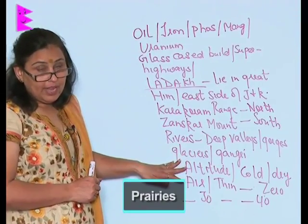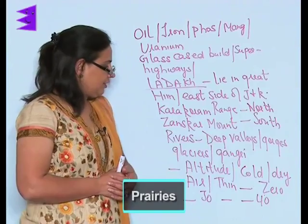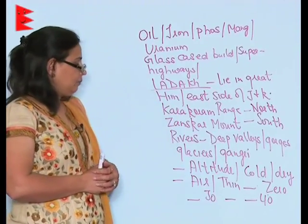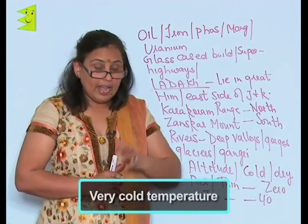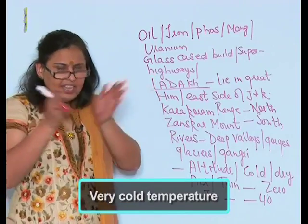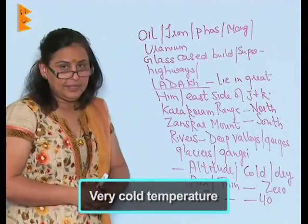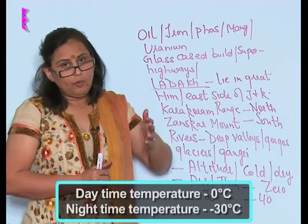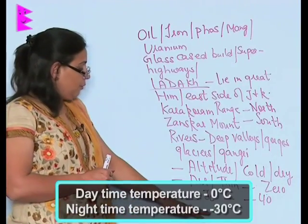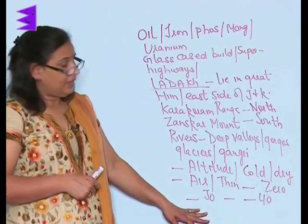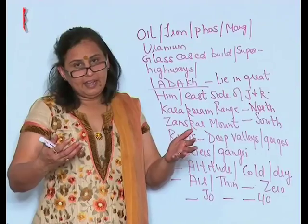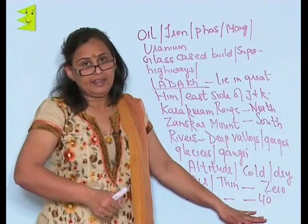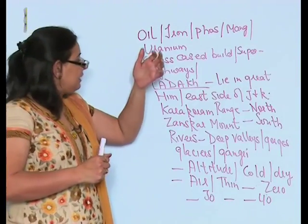The most important glacier in Ladakh is the Gangri Glacier. Since the altitude is very high, the temperature here is very cold and dry. Because the air is thin at high altitude, in the summers during the daytime the temperature could be around 0 degrees, but in the night it could fall to minus 30 degrees. In winters, most of the day and night experiences temperatures around minus 40 degrees centigrade. That is the cold desert of Ladakh.